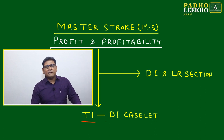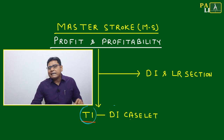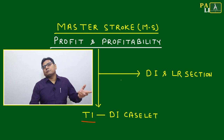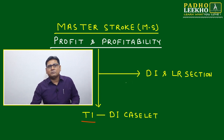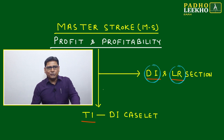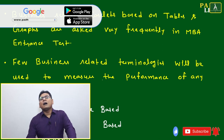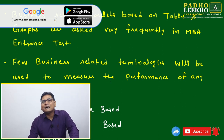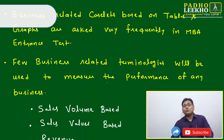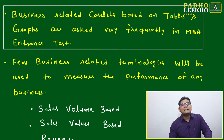This is more applicable for T1 type of DI case lets, because in T1 type of DI case lets we solve all types of business-related case lets, and in business-related case lets, profit and profitability always come into the picture. This is going to affect your DILR section. We'll try to understand what business terminologies other than profit and profitability may be asked during your exam, and how to handle them without panic.